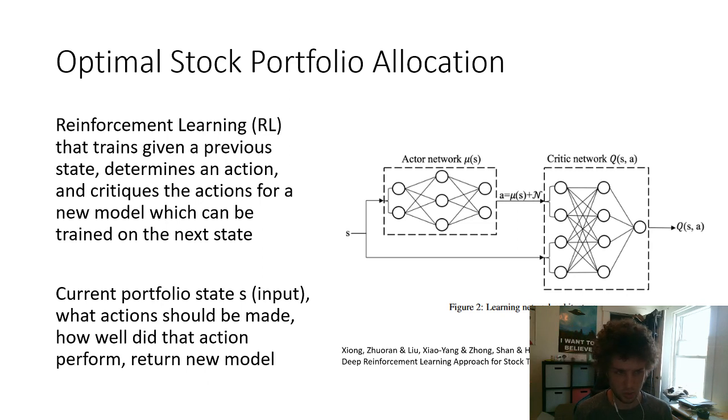Another example is optimal stock portfolio allocation using reinforcement learning. They have a state - on a given day, you have some portfolio allocation of your stocks. Do you want to make any allocations? Should you sell or buy? How should you rebalance your portfolio? That's the actor network deciding what action to make. Then you have a critic network which, given that you made that action, evaluates your return. This combines together to give you a new model QSA, which gives you a model of the state and action to make given the state.